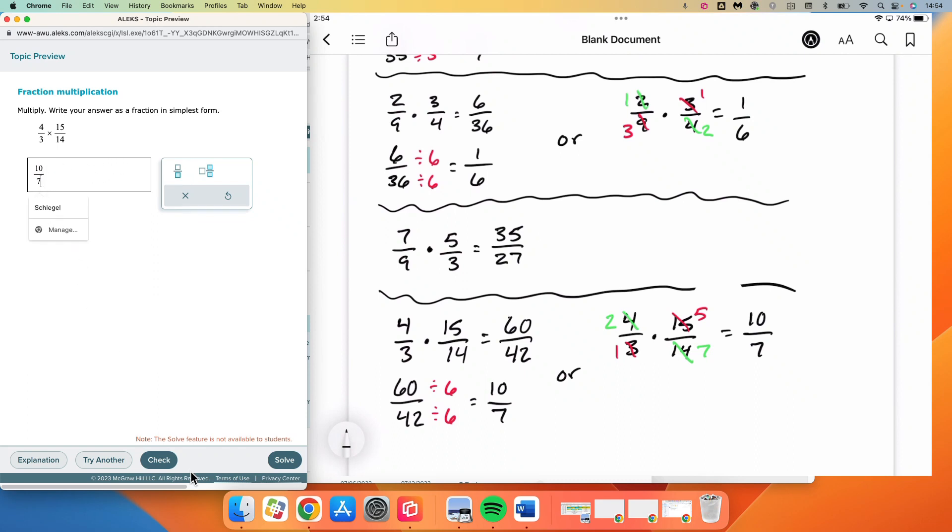Again, the regular way or the cross-cancelling way will produce the same result. It just depends on how much simplifying of the fraction you have to do after you've done the math.